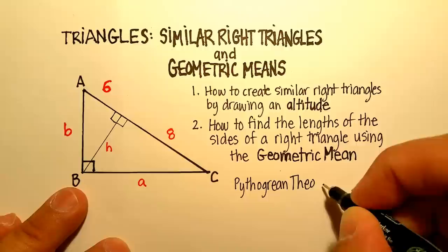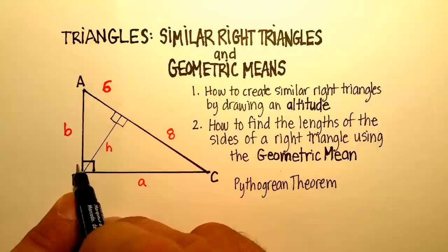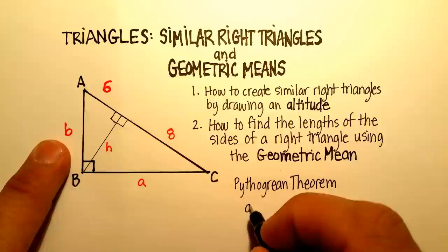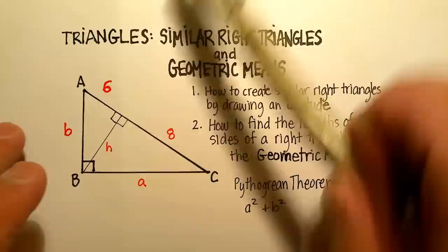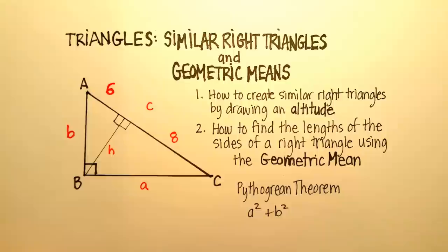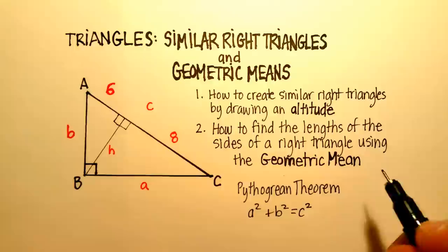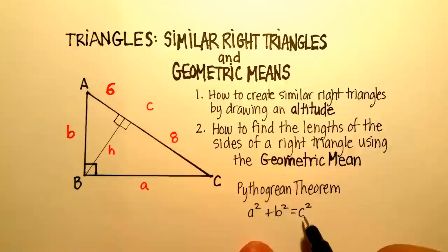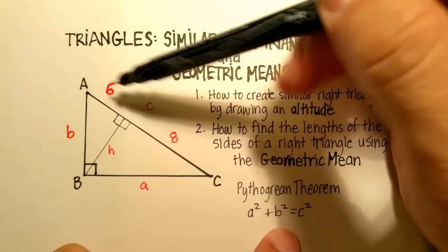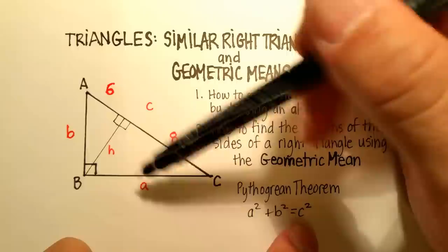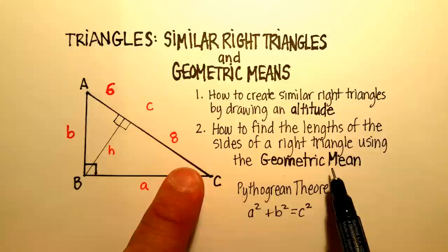The Pythagorean theorem says that if you take the squares of the two legs — a squared plus b squared — you get the square of the hypotenuse, which we'll call c. This works well if you have two of the sides and want to figure out the third. But in this particular case where we only know the length of the hypotenuse — 6 plus 8 or 14 squared — that's not going to help us solve for one of the two leg lengths. So we're going to use something called the geometric mean.